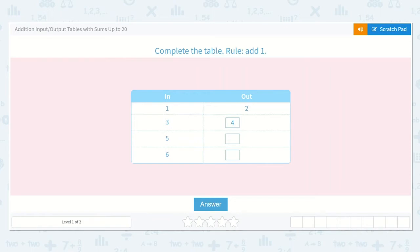If we put five in, it would come out as six, because every time we're just adding one, it's the next number up. If we put in six, it would come out as seven. So here, we are adding one each time.